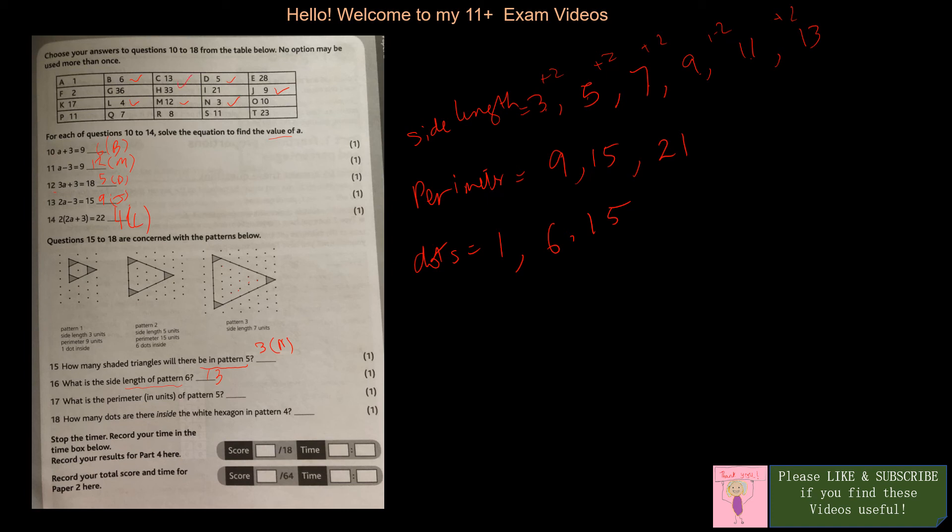What is the perimeter in units of pattern 5? We have to do the multiplication times 3 is 27, 33, 39. So pattern 5, that is 11 times 3 is 33, and 33 is H.